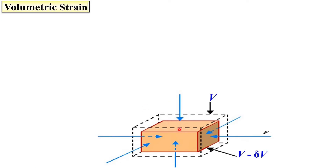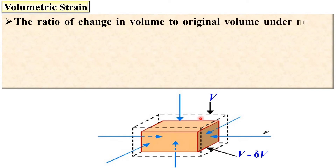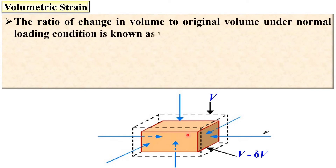This is a very good figure to understand the concept of volumetric strain. The dotted black color represents the original volume of the body, and the brown color represents the final volume of the body. The ratio of the change in volume to the original volume under normal loading conditions is known as volumetric strain.